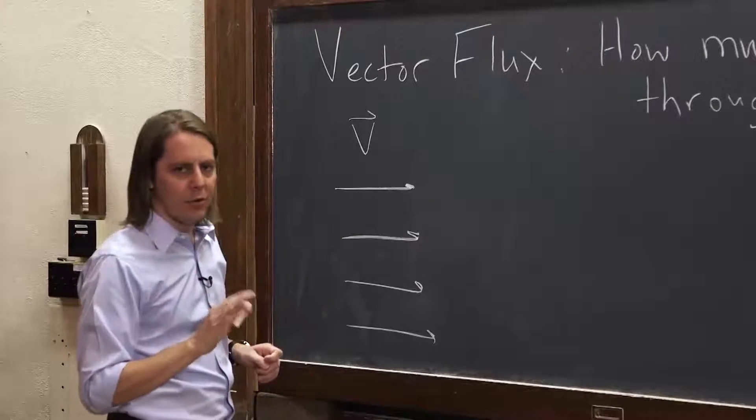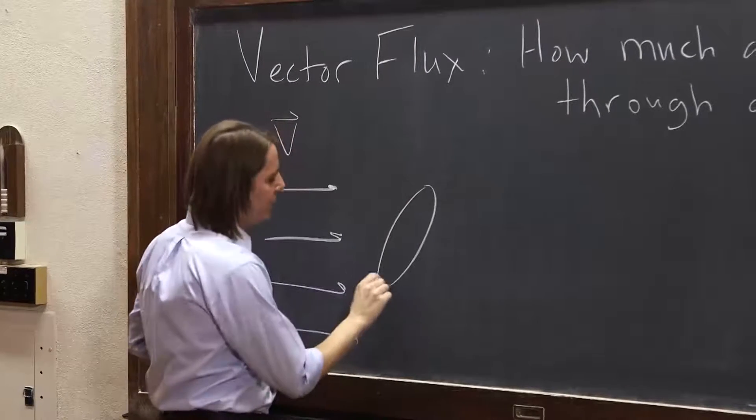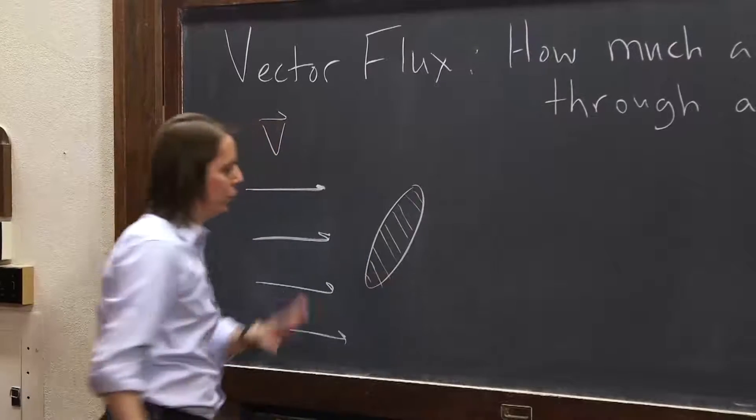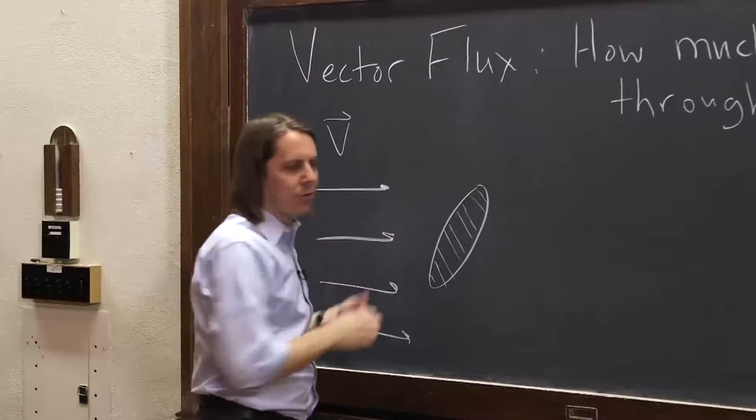And then let's draw a surface. So here I'll do kind of a little oval, kind of in the plane of the board, kind of like that. Or not in the plane of the board, kind of to the side. And you have to think about the vectors going through the surface.